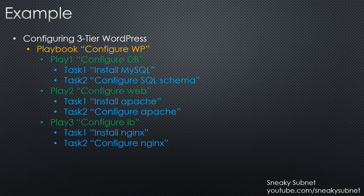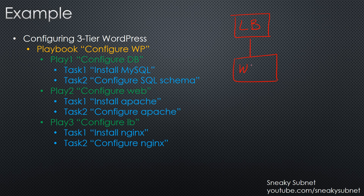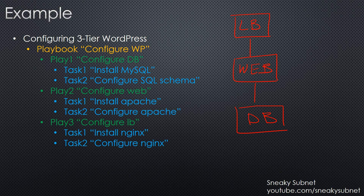The simplest way to understand all that structure is to look at an example. We will explore a WordPress application which consists of three tiers. We have a load balancer, a web server, and a backend database. Imagine that we want to deploy such an application from scratch — we currently have nothing, and at the end we want a running WordPress application.